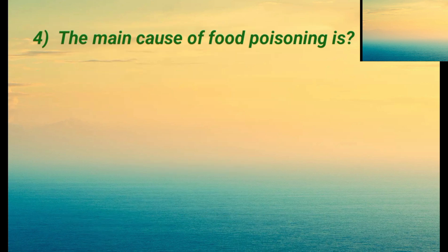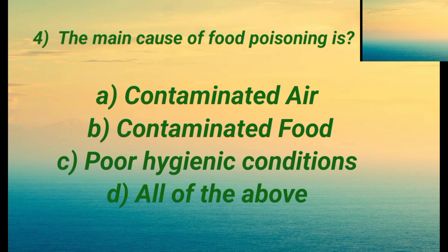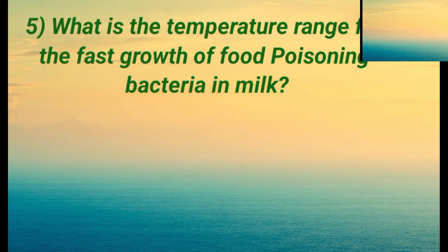Question four: the main cause of food poisoning is — Option A is contaminated air. Option B is contaminated food. Option C is poor hygienic conditions. Option D is all of the above. The right answer is D: all of the above.